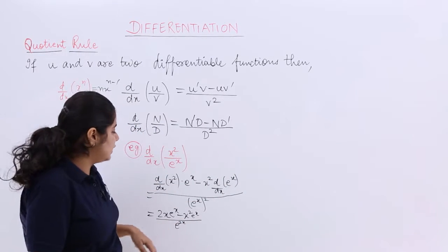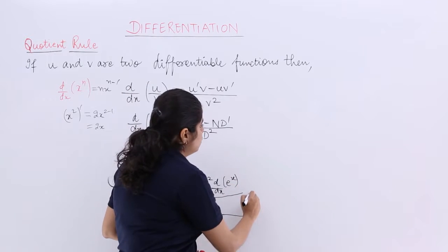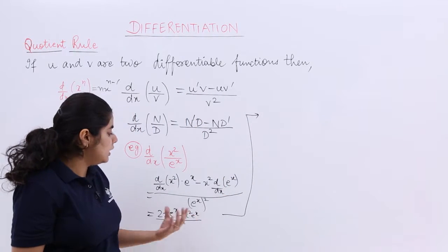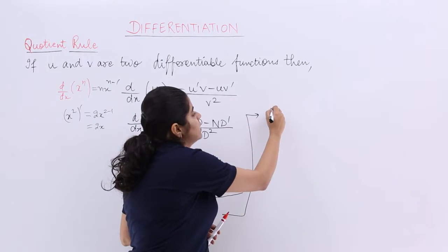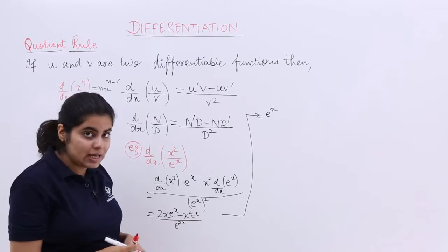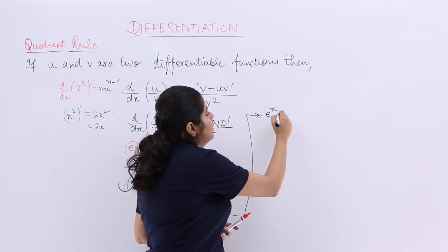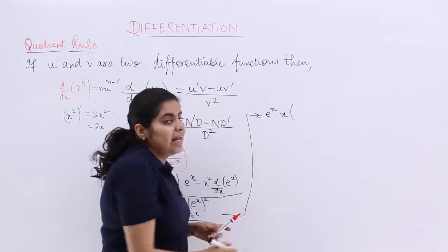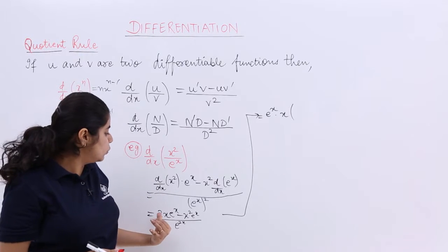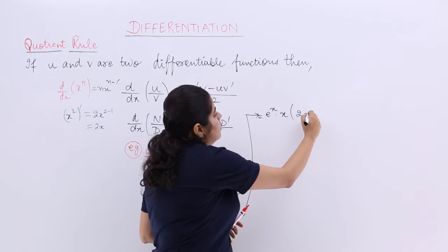Let me write the answer here. Finally, what you can do is you can take certain things common. In the numerator you see we have e raised to the power x in both the terms. Let's take it common. Also one term has x, the other has x square. Let's take x common. So it is e raised to the power x into x. The numerator has what other terms? 2 minus x.